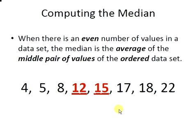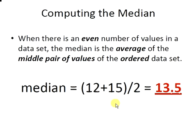When there is an even number of values in a data set, the median is the average of the middle pair of values of the ordered data set. So the middle pair of values here are 12 and 15. There are three values less than this middle pair, there are three values greater than this middle pair. And the median is the average of these two numbers. So 12 plus 15 divided by 2 gives us 13.5. So that is the median of the expanded data set.